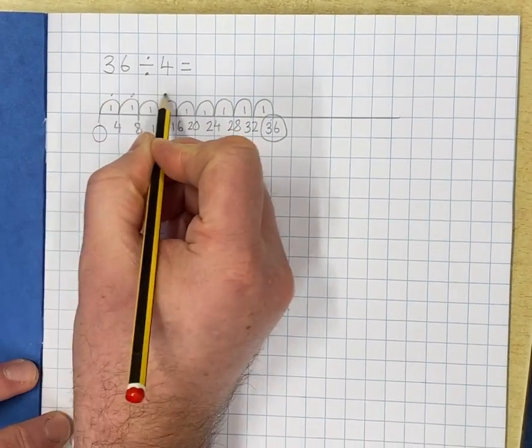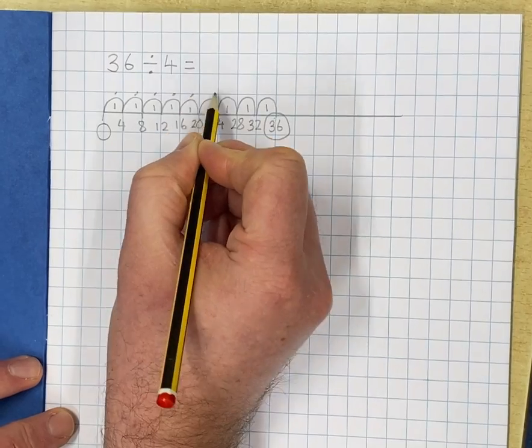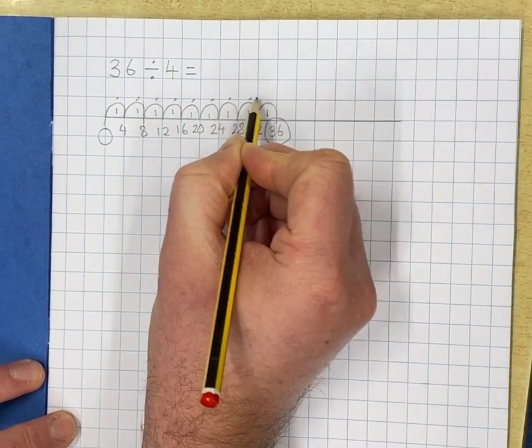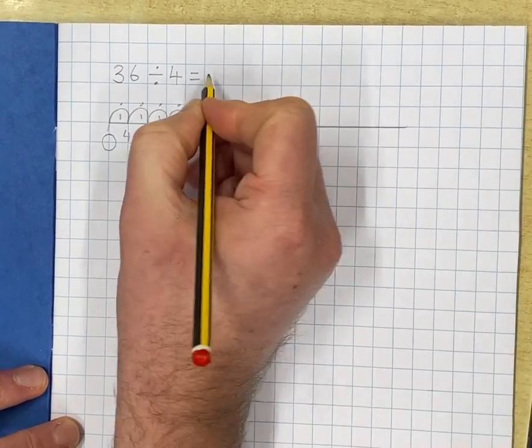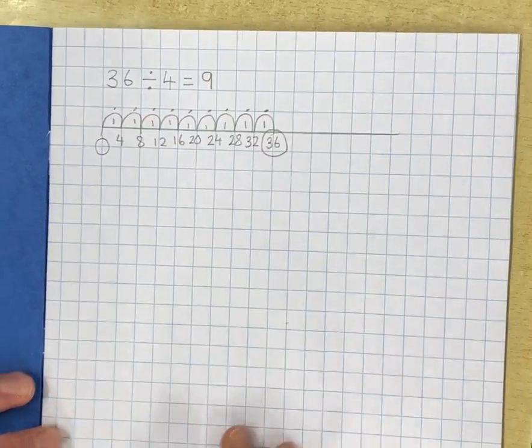1, 2, 3, 4, 5, 6, 7, 8, 9. So my answer is 9. Next way.